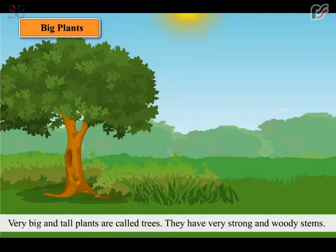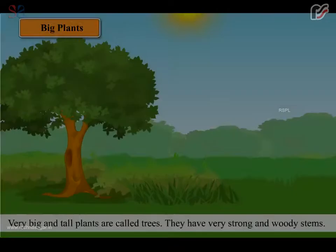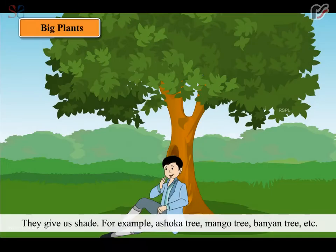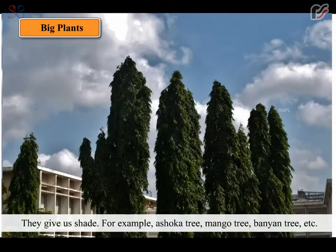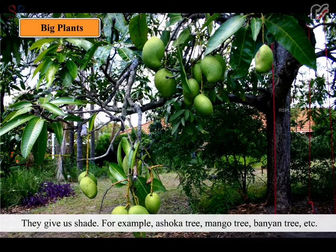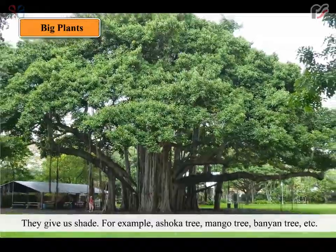Very big and tall plants are called trees. They have very strong and woody stems. They give us shade. For example, Ashoka tree, Mango tree, Banyan tree etc.